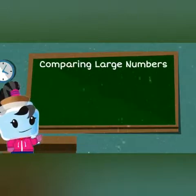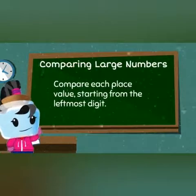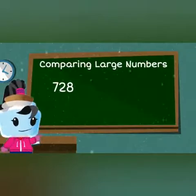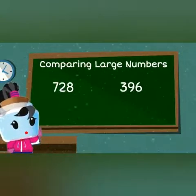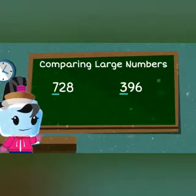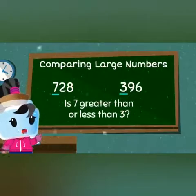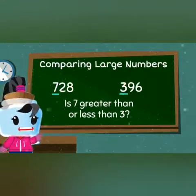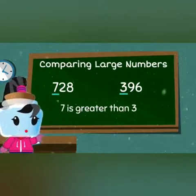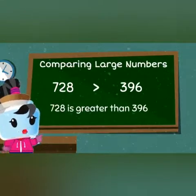The best way when comparing large numbers is to compare each place value starting from the leftmost digit. For example, let's compare 728 and 396. Start by comparing the leftmost digits, which are in the hundreds place. Is 7 greater than or less than 3? Seven is greater than 3. That means 728 is greater than 396.